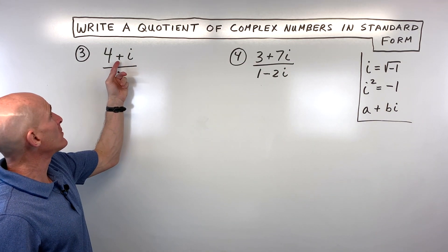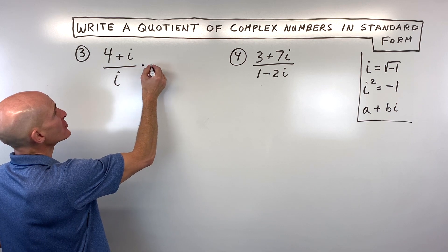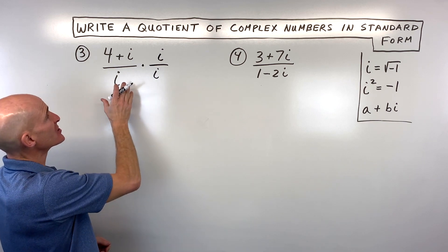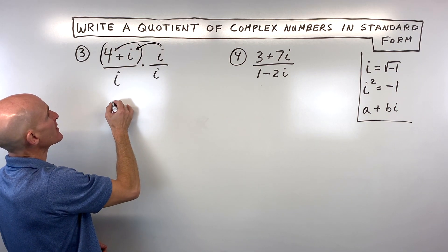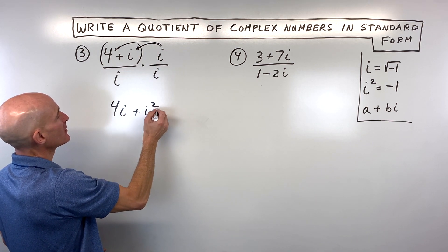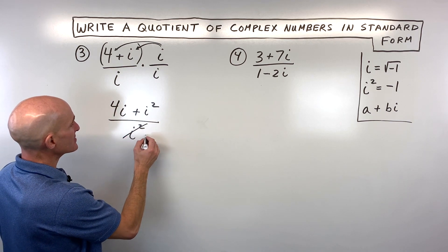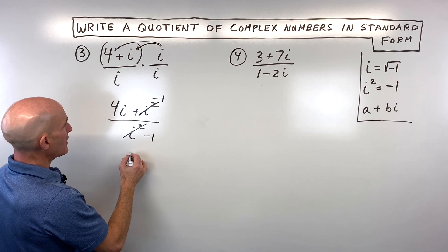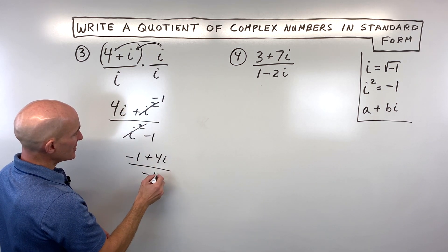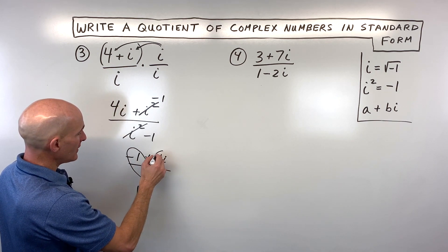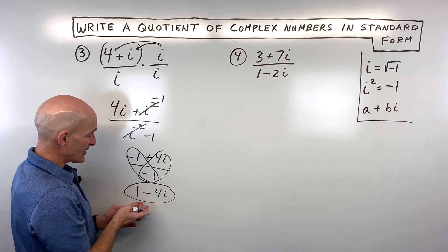For number 3, we've got 4 plus i divided by i. Again, we don't want this i in the denominator. Since it's a monomial — one term — we multiply by i over i. I'm going to distribute this i to both terms in the numerator, giving us 4i plus i squared. In the denominator, i times i is i squared. Since i squared is negative 1, we replace both: we get negative 1 plus 4i in the numerator, and negative 1 in the denominator. Splitting into two fractions: negative 1 divided by negative 1 is positive 1, and 4i divided by negative 1 is negative 4i. So the answer is 1 minus 4i, which is in standard form — real part then imaginary part.